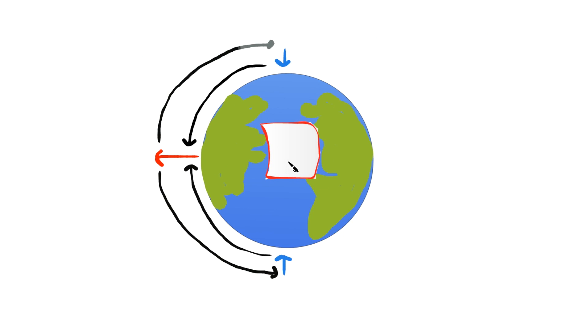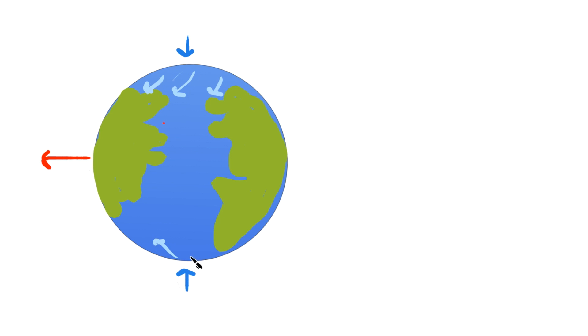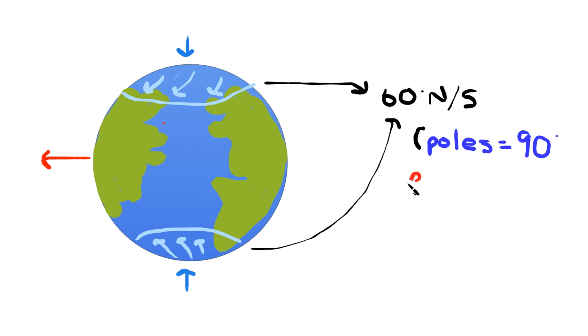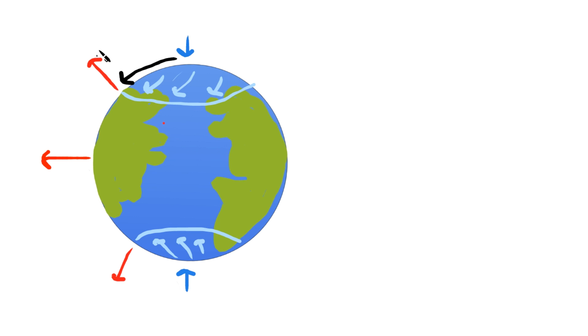And we could see it at play when we put the one cell model to the test. Wind traveling from the high pressure poles to the low pressure equator curve enough to stop short at 60 degrees latitude north and south. Poles are 90 degrees north and south, and the equator is zero by the way. Anyway, once the air reaches 60, it gains enough heat to rise, finishing off our polar cell convection.